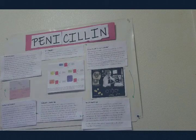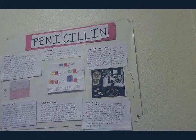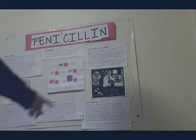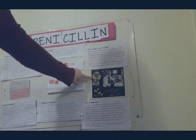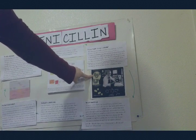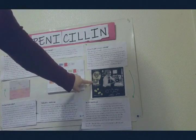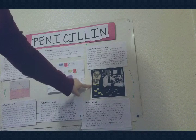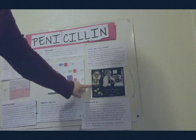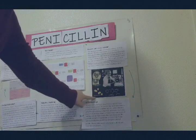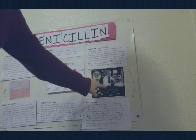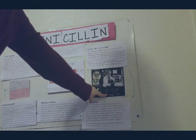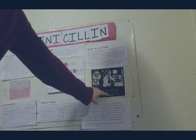Fleming recorded his observations in the British Journal of Experimental Pathology in 1929. Here you can see Alexander Fleming and the contaminated Petri dish. The mold is the penicillin, and this right here is the Staphylococcus bacteria. Here is the chemical formula for penicillin G.